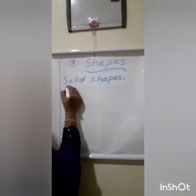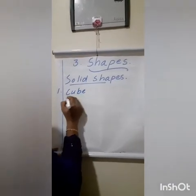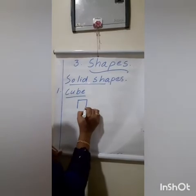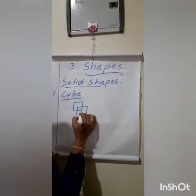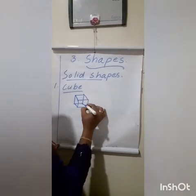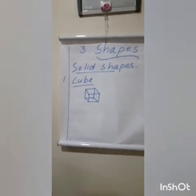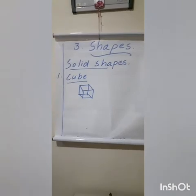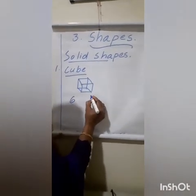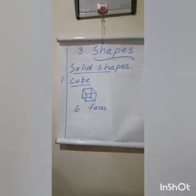First, solid shape is a cube. You listen how we draw a cube. This is the shape of a cube. A cube has basically six faces. How many faces? Six faces.